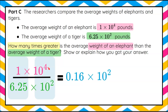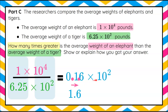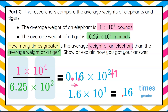When we divide powers with the same base, we subtract the exponents: 4 minus 2 is 2. So this gives us 0.16 times 10 squared. This is not in scientific notation — we need one significant digit to the left of the decimal. Moving the decimal right by 1 makes the factor 1.6, so the exponent decreases by 1, giving us 1.6 times 10 to the first, which equals 16. So the elephant is 16 times greater than the weight of the tiger.